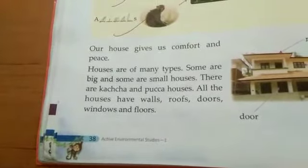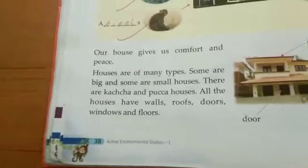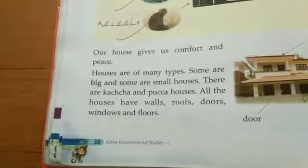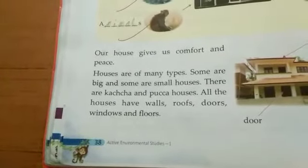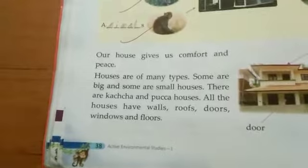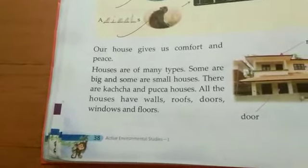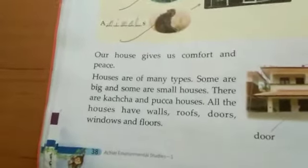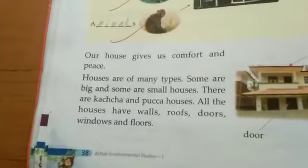All the houses have walls, roofs, doors, windows and floors. Saare houses mein kya hote hain? Walls hote hain, roofs hote hain, doors hote hain, windows hote hain aur floors hote hain.